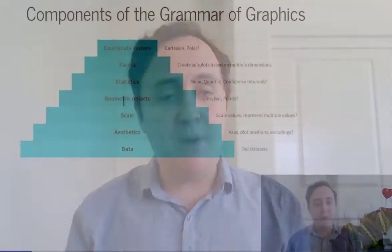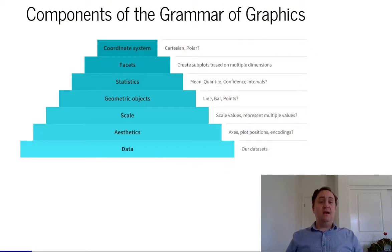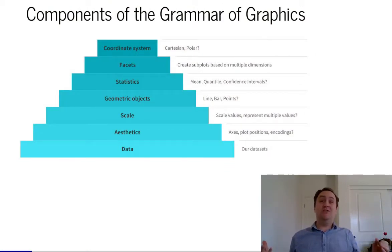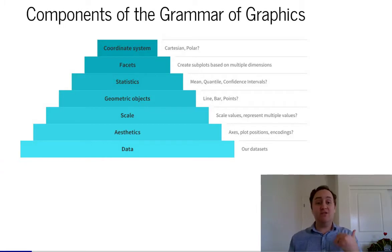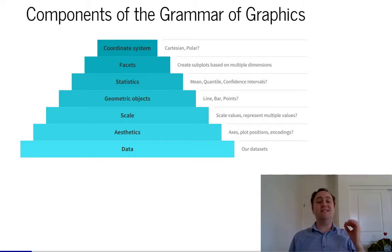So what are the grammar of graphics? There are seven components. At the very baseline, you have the data that you're starting with. This can be any kind of data — ggplot2 might do some calculations to that data before it shows it to you. On top of the data, we have the aesthetics. You can think of these as the different axes of your graph.